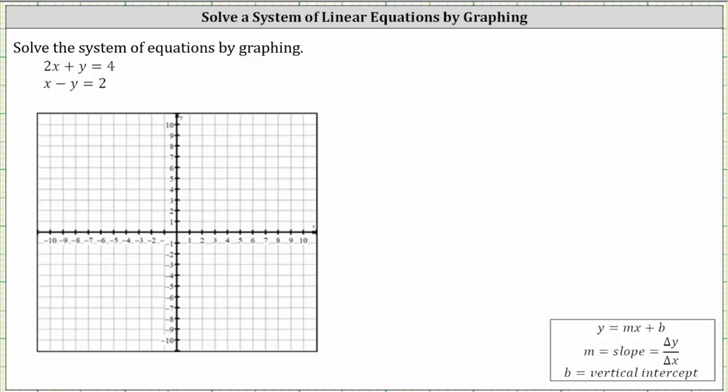So let's begin by graphing 2x + y = 4. Let's write this equation in the slope-intercept form, which is the form y = mx + b. Beginning with 2x + y = 4, to solve for y, we subtract 2x on both sides.